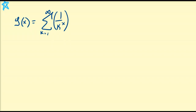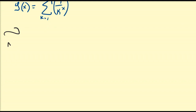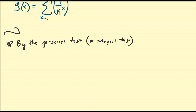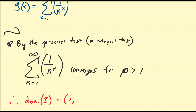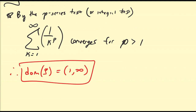To begin, let us figure out what values of x the Riemann zeta function is defined for. We look at the p-series test, which is directly related to the integral test for convergence of infinite series. By the p-series test, the sum from k equals 1 to infinity of 1 over k to the p converges for p greater than 1. So the domain of the Riemann zeta function is the interval from 1 to positive infinity, not including 1.